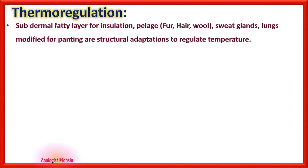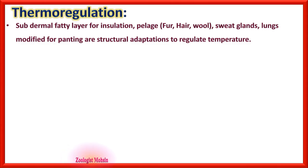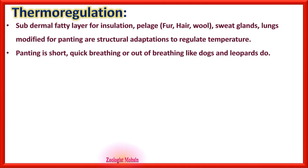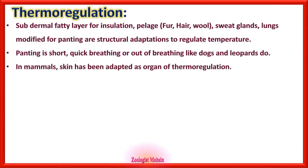Structural adaptations for thermoregulation include subdermal fatty layers for insulation, pelage (fur, hair, or wool), sweat glands, and lungs modified for panting. Panting is short, quick breathing, like dogs and leopards do when they run or in summer. In mammals, skin has been adapted as an organ of thermoregulation.